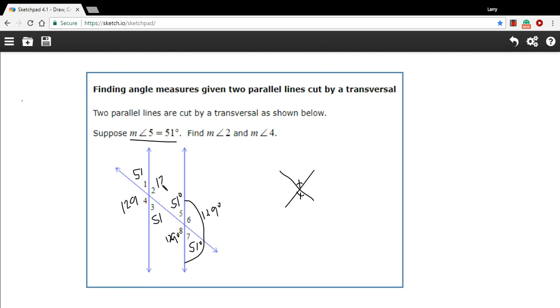So in the case of finding the measures of angle 2 and angle 4, it's just one answer, it's 129. So that is a little bit of work with finding the angle measures in a transversal.